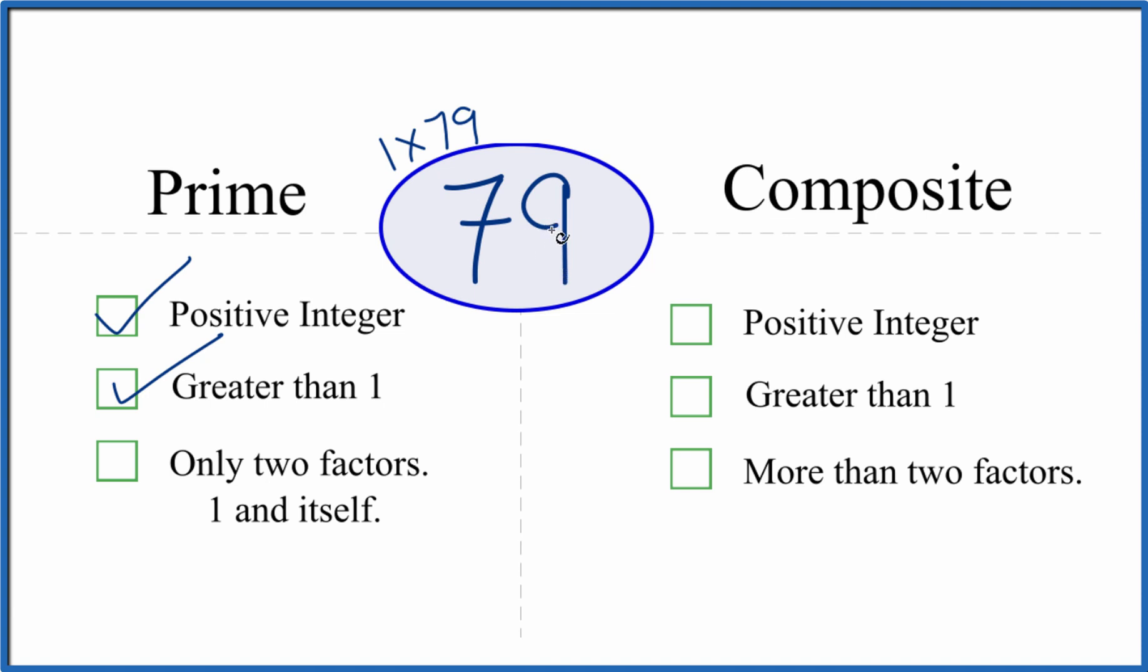There really aren't any other factors other than 1 and 79 that go into 79. So yes, there are only two factors. That makes 79 a prime number. But is it a composite number? Positive integer greater than 1.